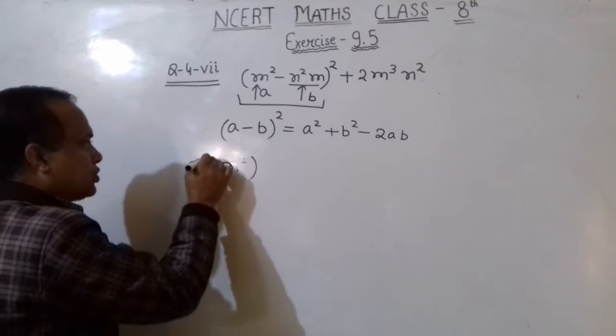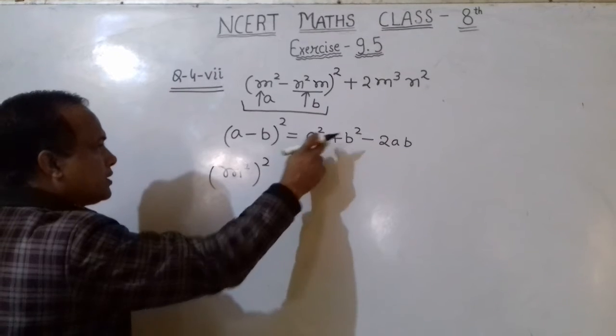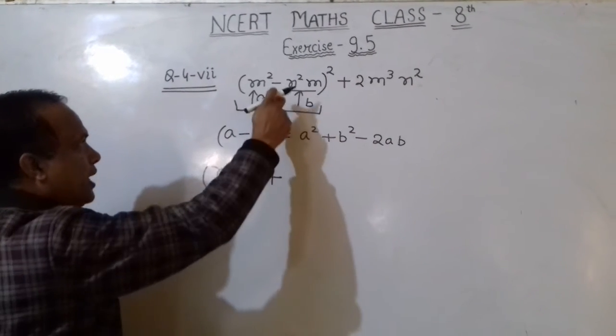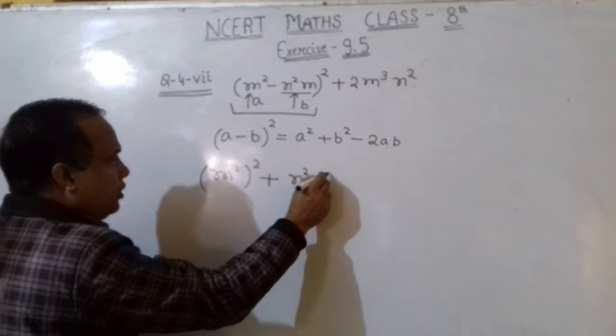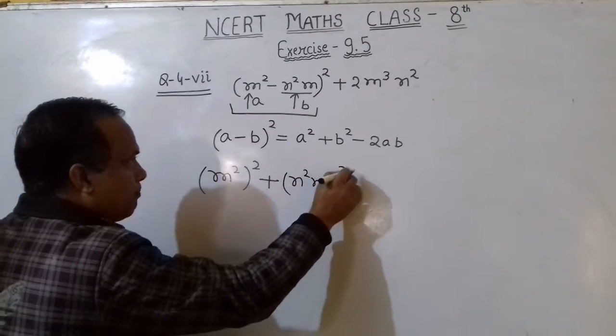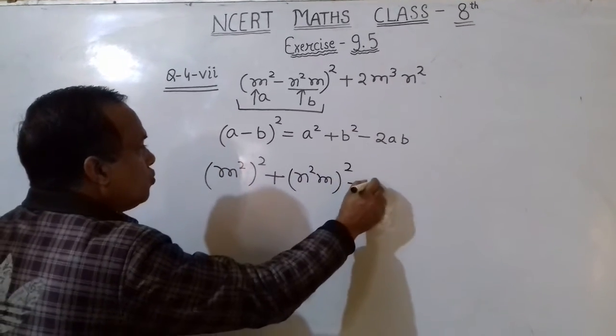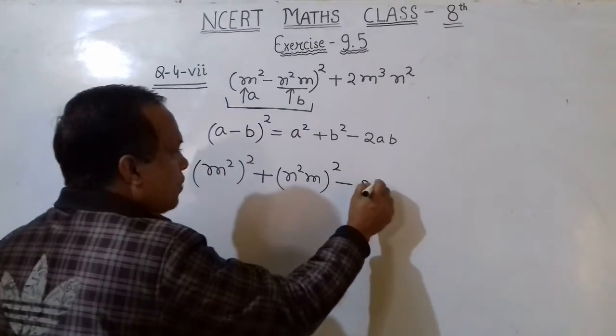that is (M²)² plus B², that means (N²M)² minus 2 times A, M².